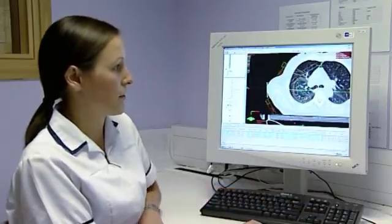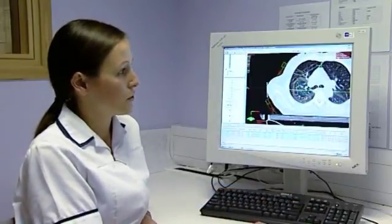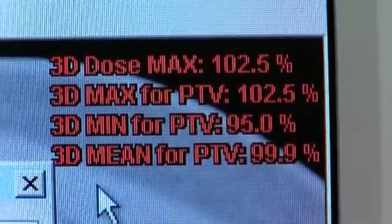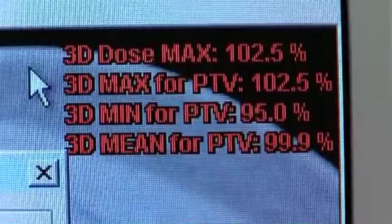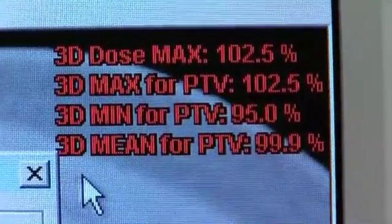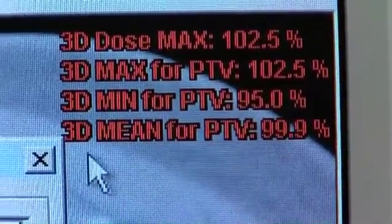We can see there that 95% is covered, and also here this information tells us that 95% is the minimum for the PTV. We also have a mean for the PTV of 99.9% and we have a maximum of 102.5%.